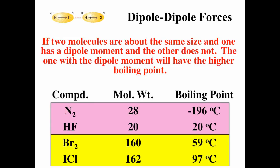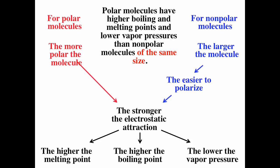For London dispersion, it's about molecular weight, so when looking at dipole-dipole effects you want molecules with about the same molecular weight. Comparing N2 and HF — about the same molecular weight (28 and 20) — N2 is nonpolar and HF is polar, so HF has a much higher boiling point. Comparing Br2 and ICl — about the same molecular weight — Br2 is nonpolar and ICl is slightly polar, so ICl has a higher boiling point. For polar molecules, the more polar the molecule, the stronger the electrostatic attraction, the higher the melting and boiling points, and the lower the vapor pressure. For nonpolar molecules, only London dispersion applies: the greater the molecular mass, the easier to polarize, the stronger the interaction, and the higher the boiling and melting points.